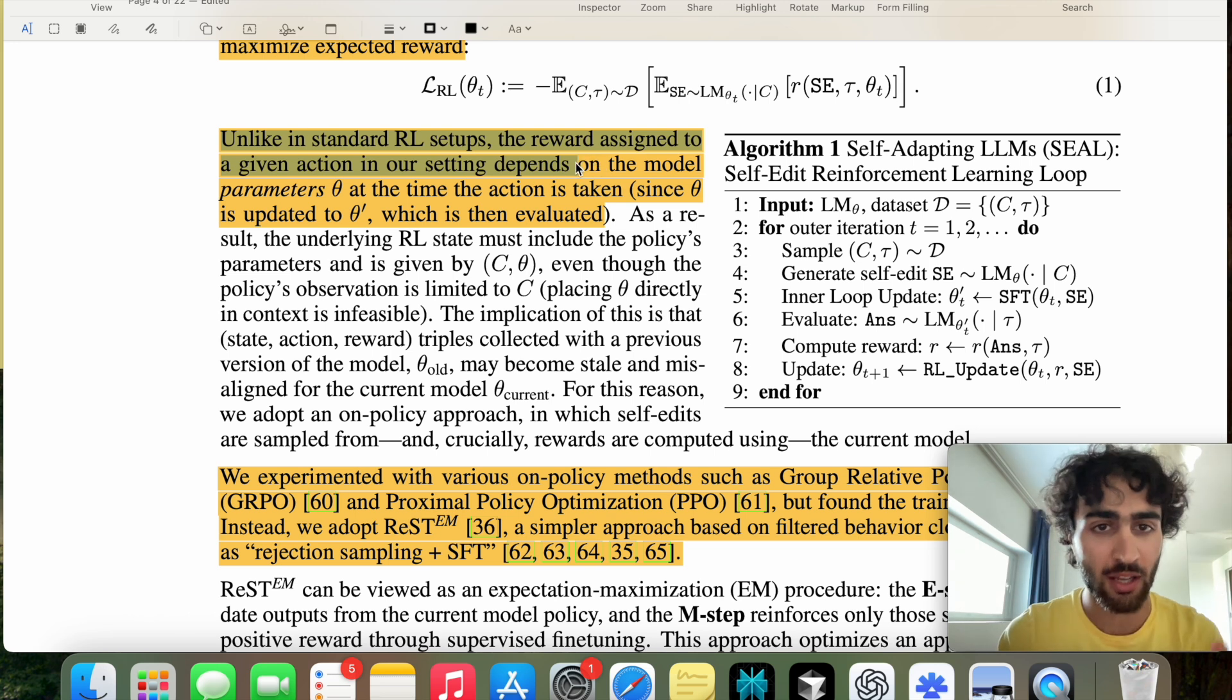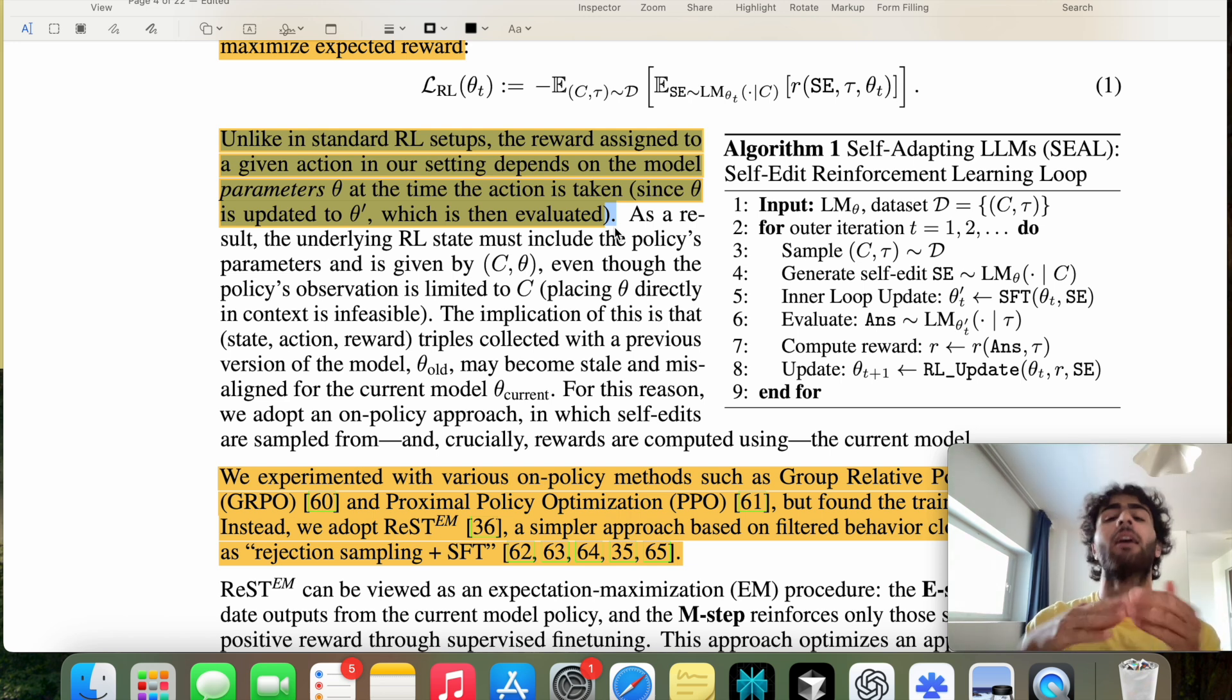Unlike in standard RL setup, the reward assigned to a given action in our setting depends on the model parameters at the time the action is taken. So what this means is that because we are updating our models to achieve a task at a given time step, we cannot use, for example, a replay buffer. So replay buffer essentially stores your previous generations and then uses this to update the policy all at once. It's called off-policy learning because you're not updating the policy on the data in a concurrent manner. It's actually just kind of sampling data from a replay buffer and improving the policy this way.